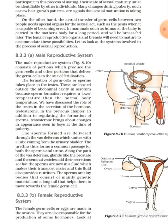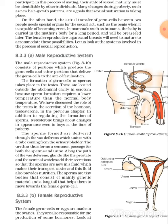The seminal vesicles and the prostate gland contribute fluid to the sperms so they are easily transported. The sperm are tiny bodies that consist mainly of genetic material and a long tail that helps them to move towards the female germ cells.